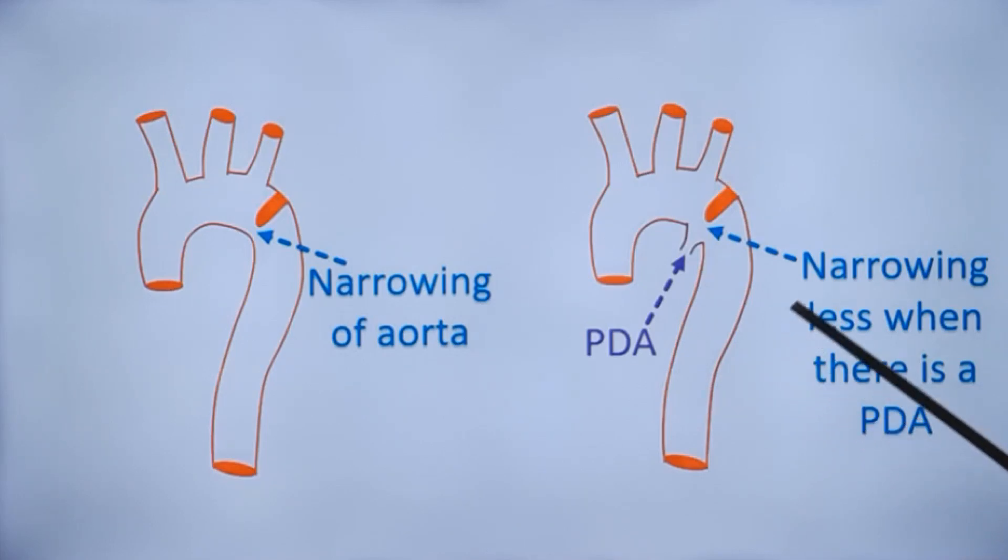the infant can go into shock, heart failure, acidosis, etc. after closure of the ductus. This is also the reason why symptoms of coarctation may manifest after spontaneous closure of PDA as well.